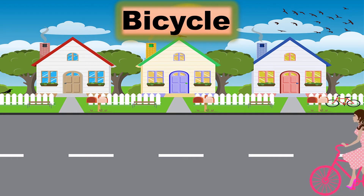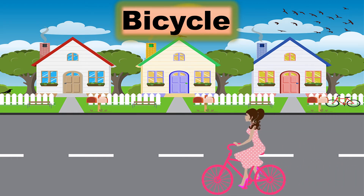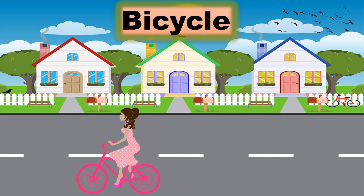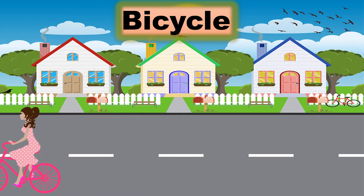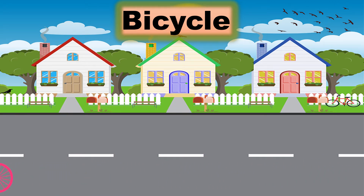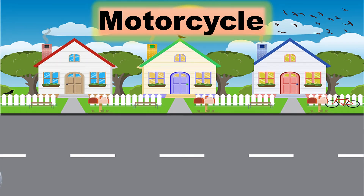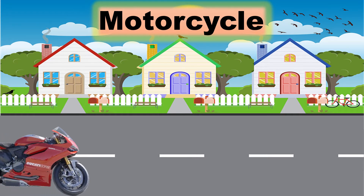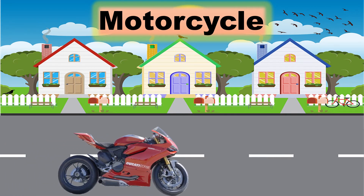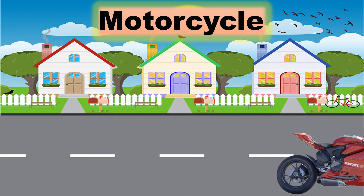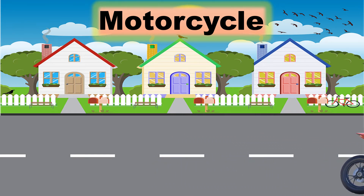Bicycle. It is a slow means of transport and it is used for short distances. Motorcycle. It carries two people over a short distance.